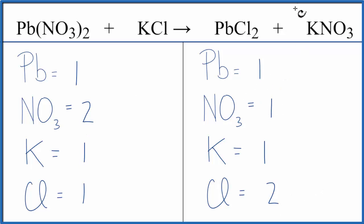Let's fix the nitrates first. We could just put a 2 in front of the potassium nitrate. So we have the nitrate, 1 of these times 2, gives us 2. Those are balanced.